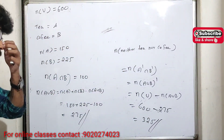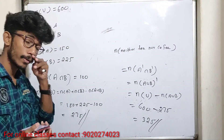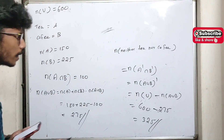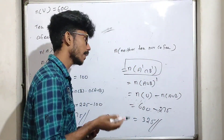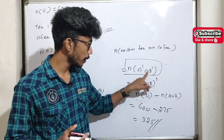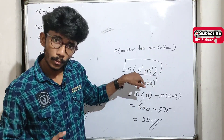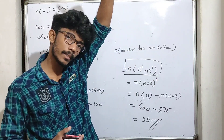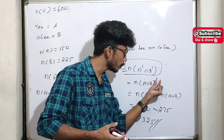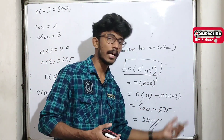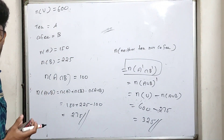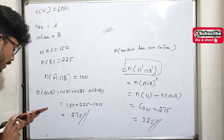So neither tea nor coffee gives us the complement. If you believe it involves more than two things, it is not just A ∪ B. Any doubt? No doubt. Okay, let's go to the next question.